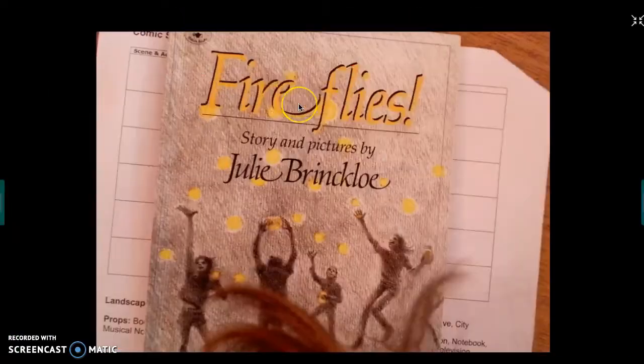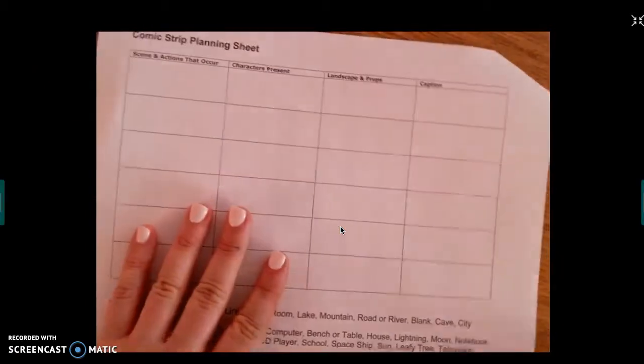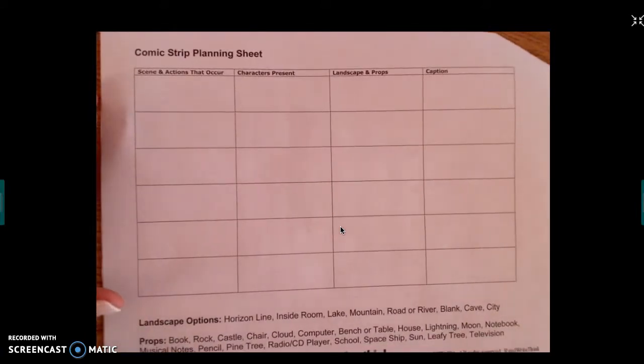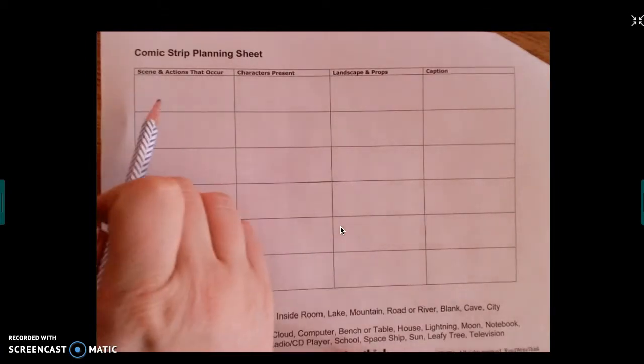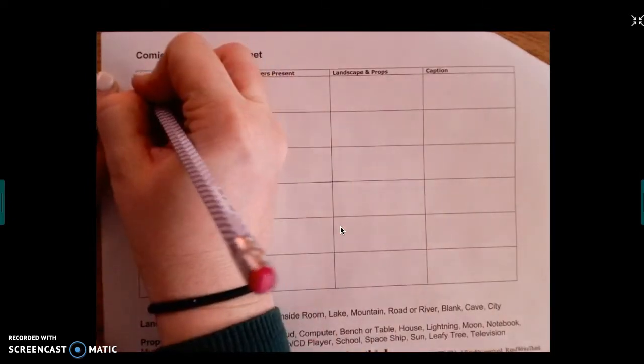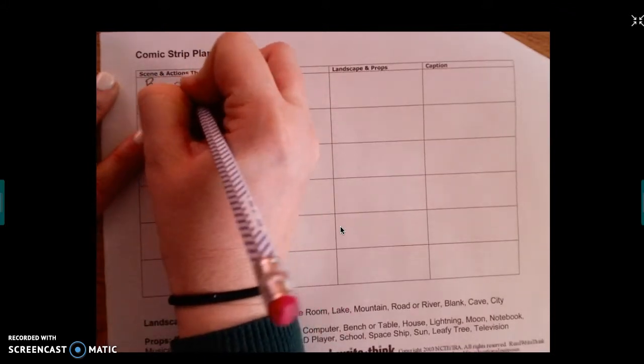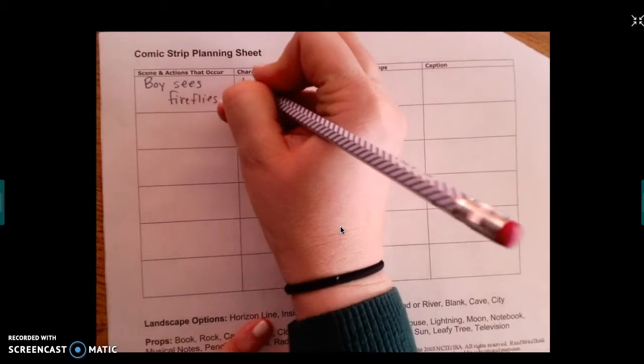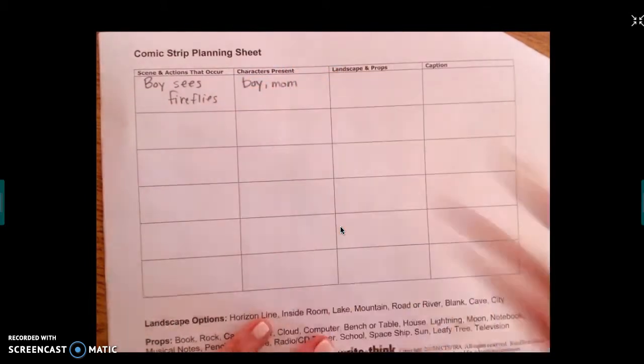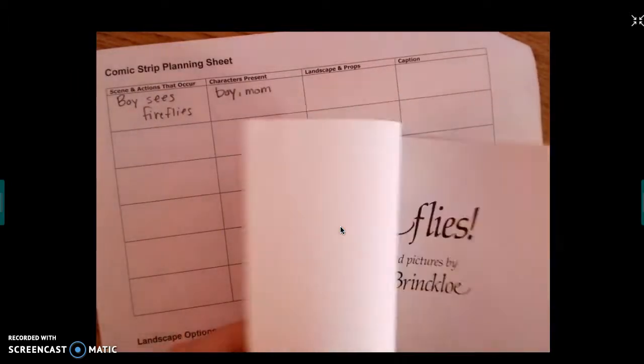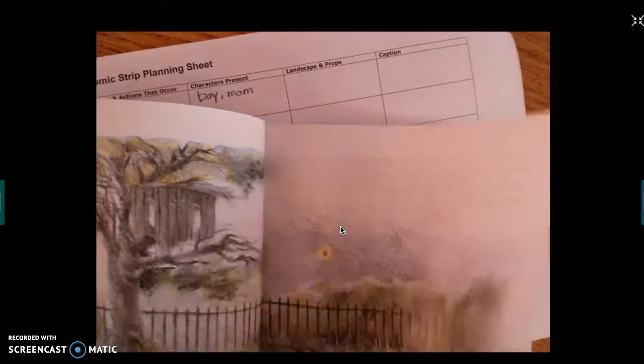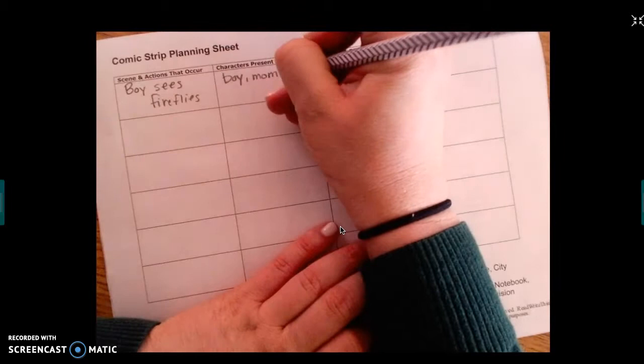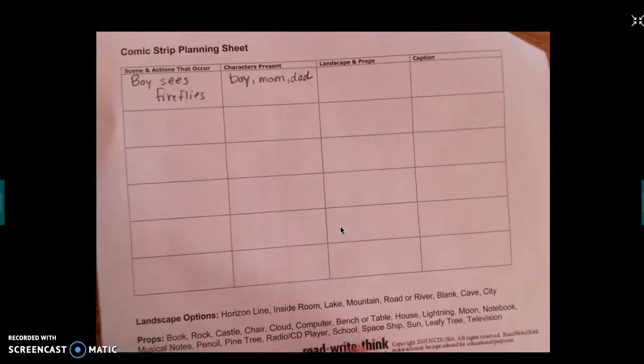So for Fireflies, as I'm reading I'm going to pause. Oh that was an important scene. I should probably capture that on my sheet here. So I would do the scene and actions that occur. I'm going to do boy sees fireflies. The characters present are just the boy, his mom, I believe it's his mom. There's the boy. Yeah so the boy, mom, and dad, because I'll need to have all three of those characters on my comic strip.